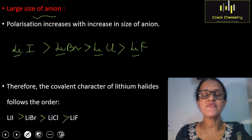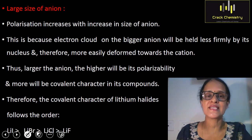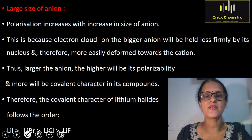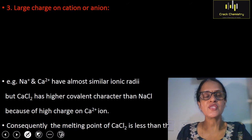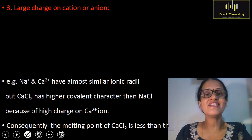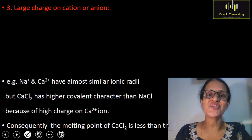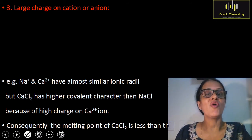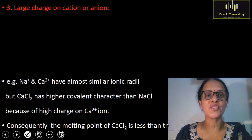Whatever points I have discussed are written in this slide. The next rule is large charge on cation or anion. Always remember that if a cation has a larger charge, its polarizing power will be more. And if an anion has a large charge, its tendency to get polarized will be more. A cation polarizes an anion — the cation causes polarization and the anion gets polarized.